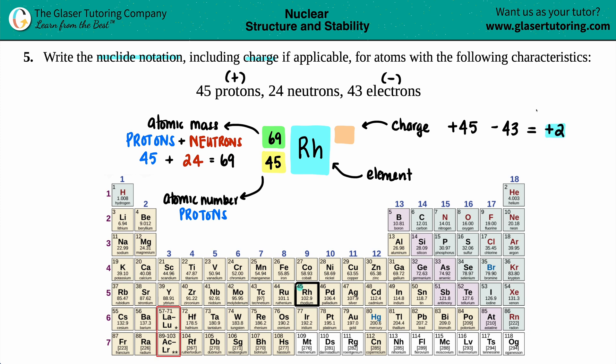So your overall charge is going to be positive. And it's going to be positive by 2. So that's the charge that goes here. Whether you want to put plus 2 or 2 plus, it doesn't matter to me. Sometimes I write plus 2. Sometimes I write 2 plus. Just know that it's the same. I'm just going to put plus 2. And now, these are all done. So this is your full nuclide notation. 69 on the top for the atomic mass. Atomic number, 45. This is rhodium, Rh. And then it's a plus 2 charge.